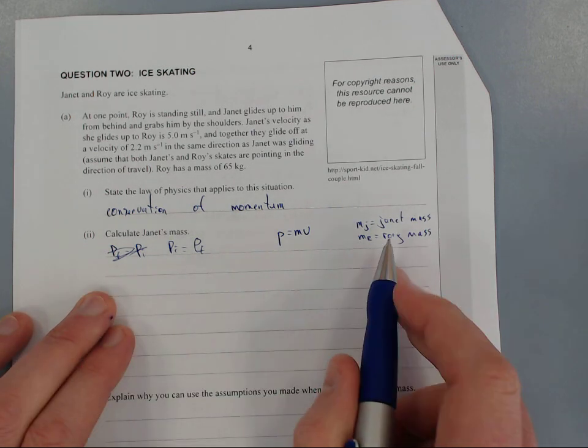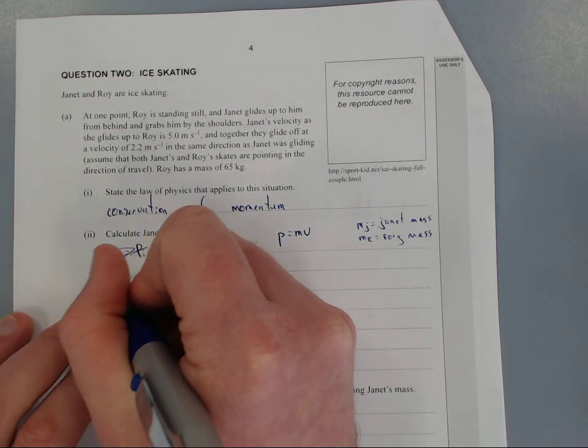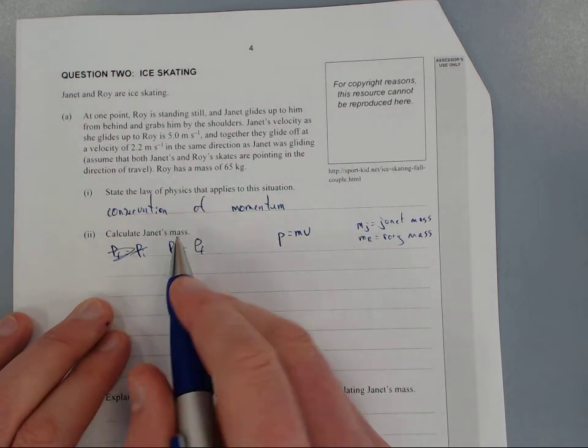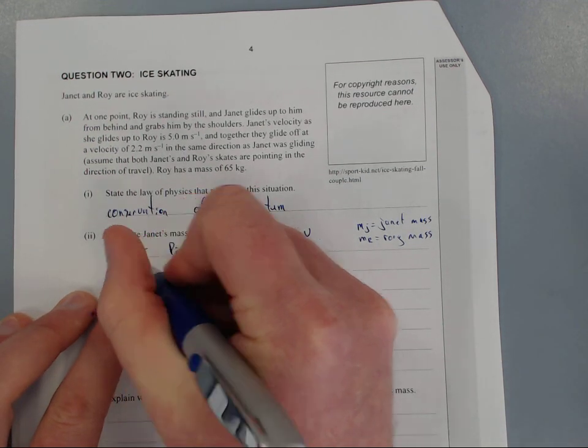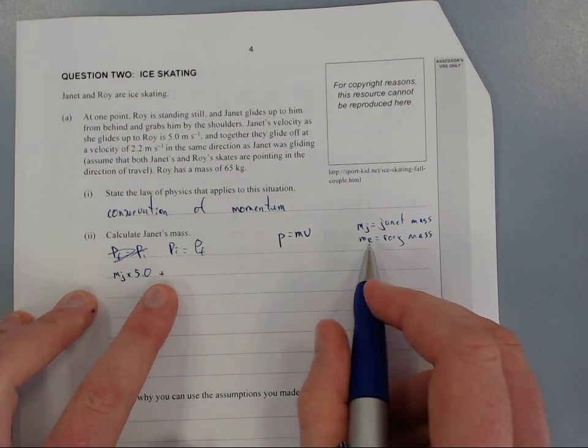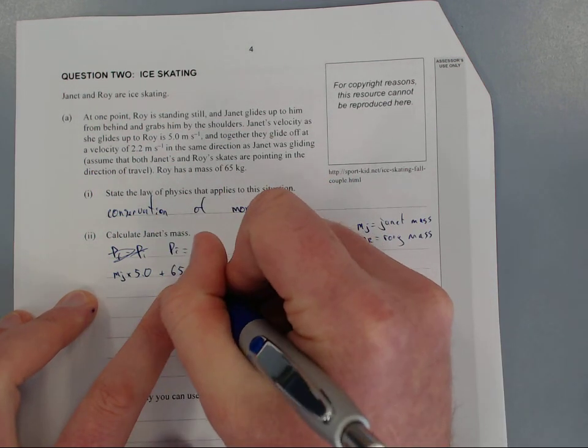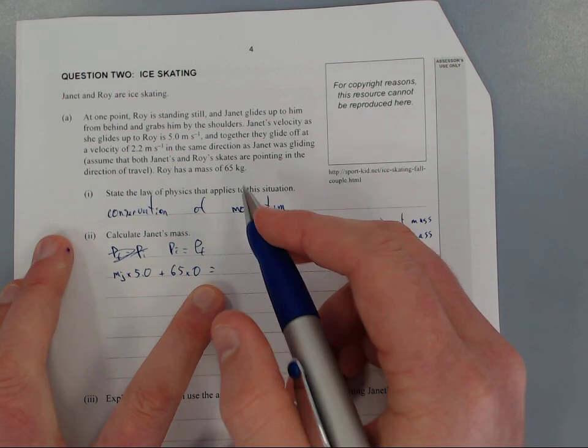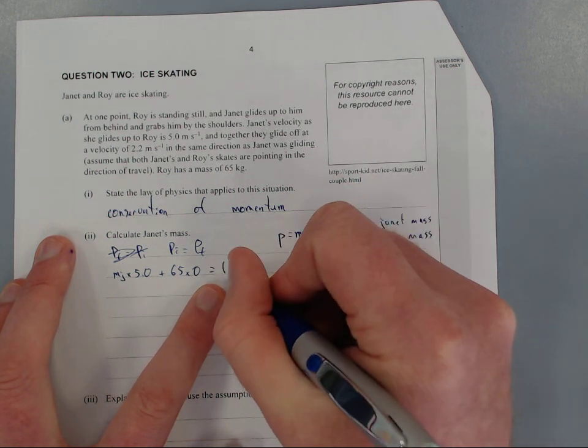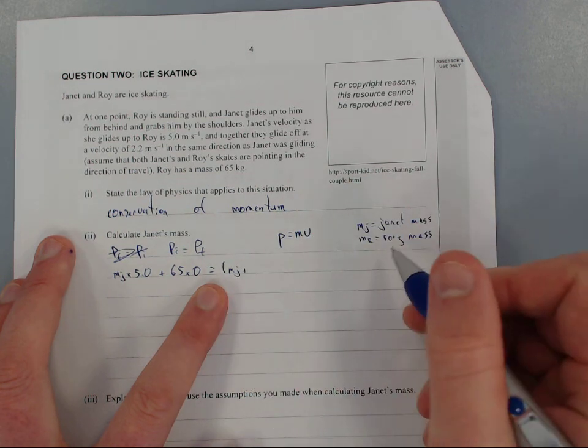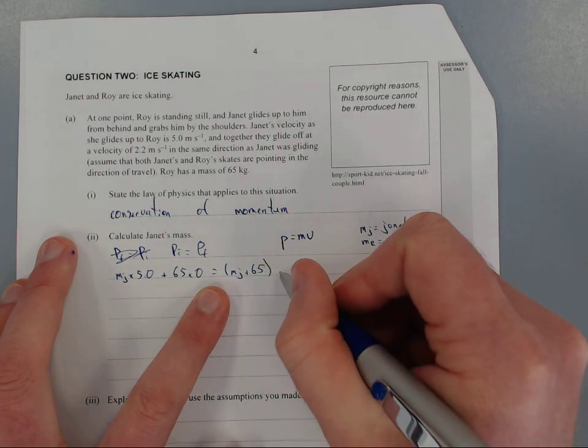Initial momentum is MJ times 5 meters per second plus Rory's mass, 65 kg, times Rory's velocity, which is zero since he's stationary. This equals the final momentum, which is Janet plus Rory - so MJ plus 65 - times 2.2 meters per second.